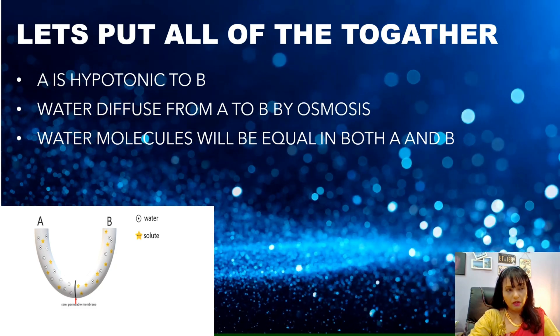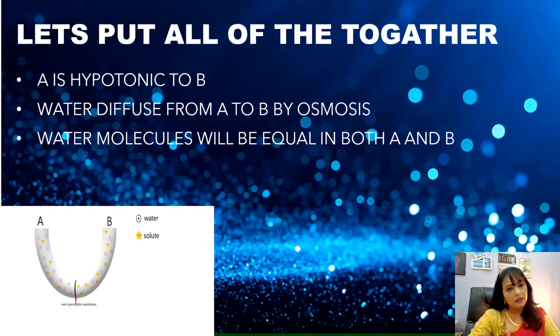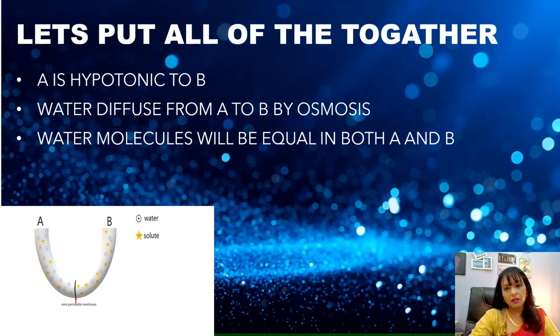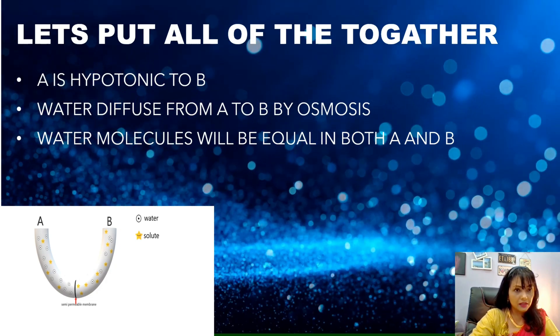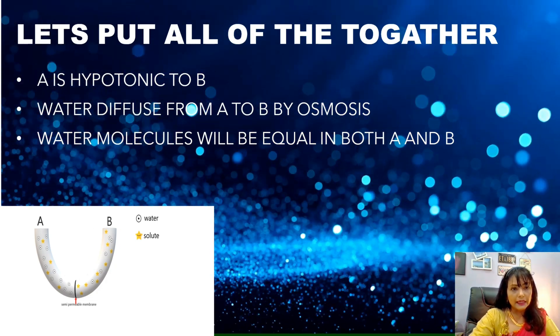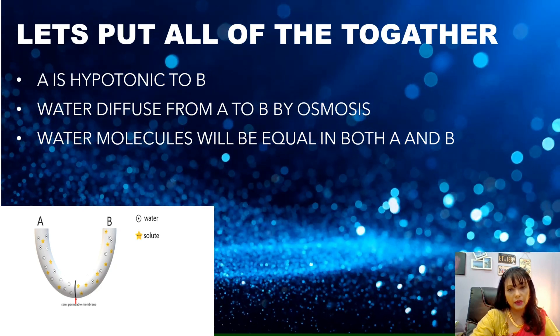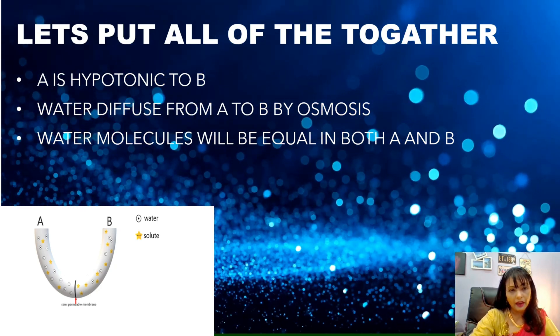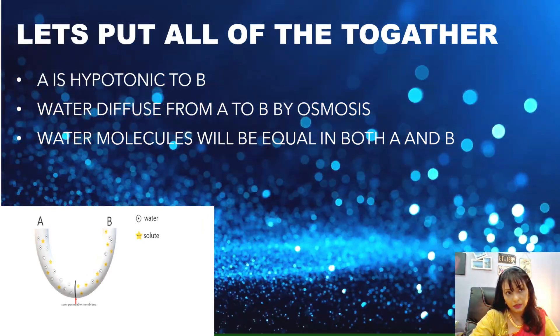Now, it is time to put all the elements together. The environment, the water diffusion and also the final consequences on the system. For this particular system that we have been discussing all the while, A is hypotonic to B. Water diffuses from A to B by osmosis and water molecules will be equal in both A and B. So, yeah, that's about it.